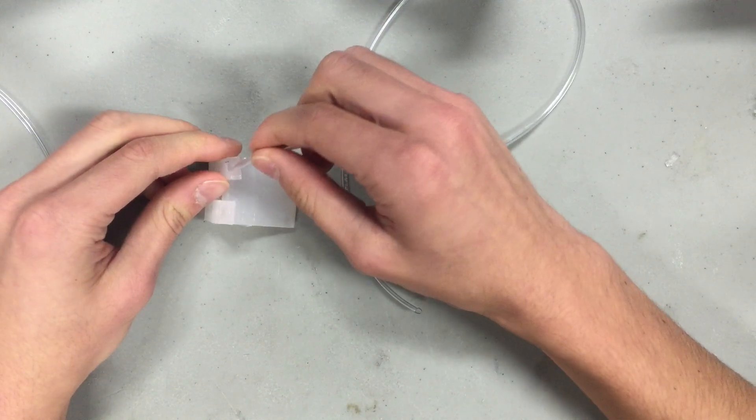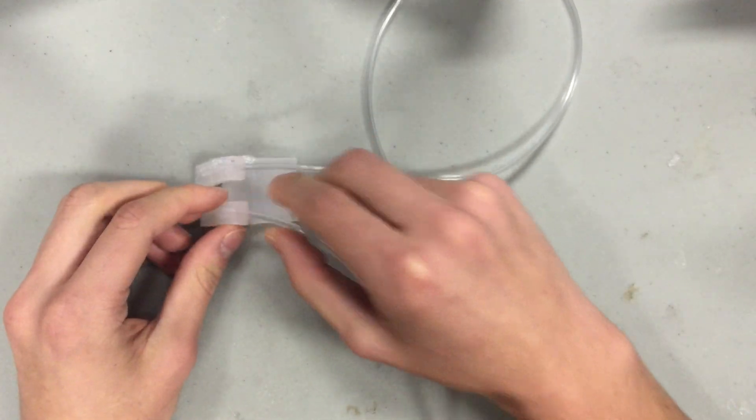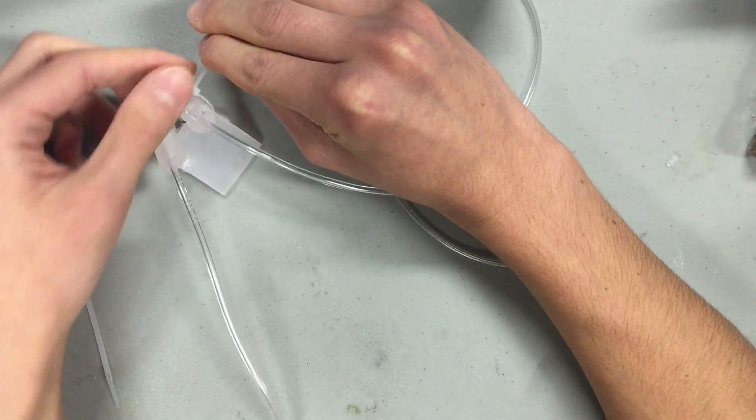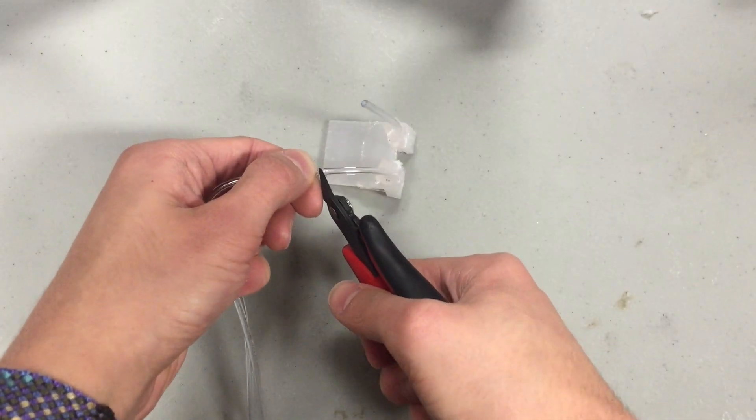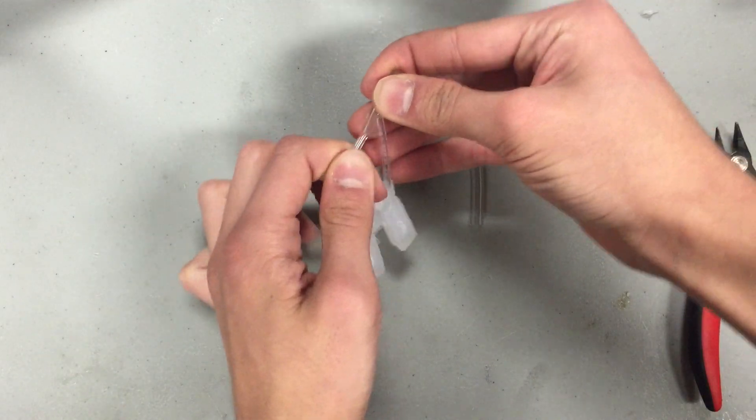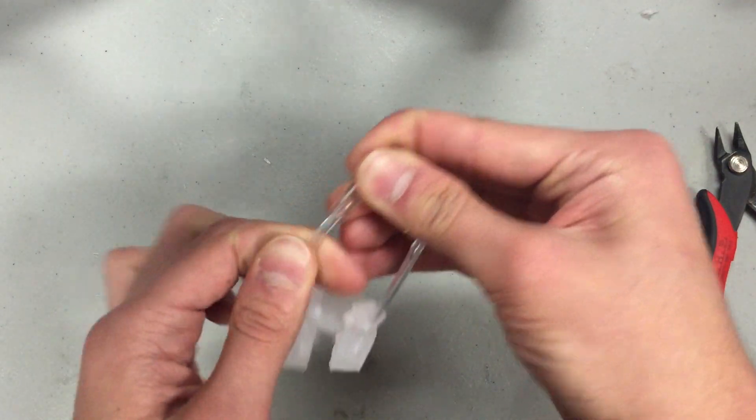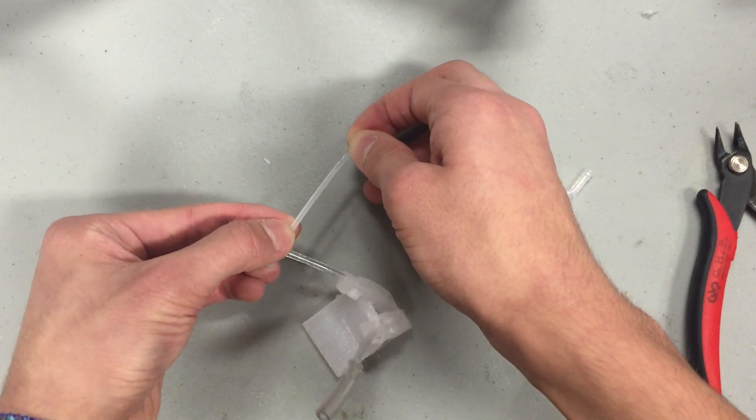After it's out of the mold, you can push the 1 16th inch tubing into the openings of each leg. Secure these with small zip ties. Trim the tubes to a short length and thread each of them through a short length of 1 8th inch tubing. Use the zip tie to keep them connected.